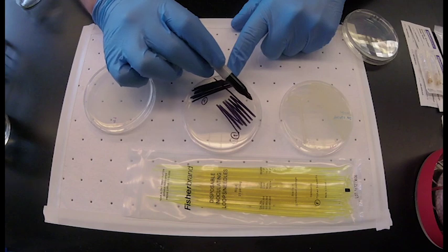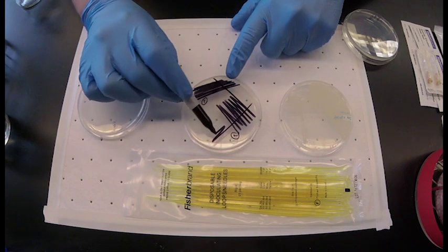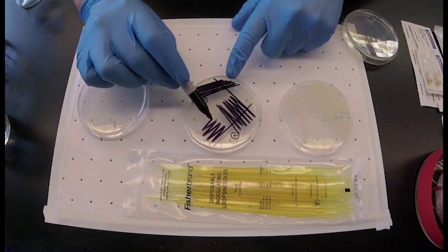Rotate the plate again and streak through the second area to dilute the bacteria into single colonies.